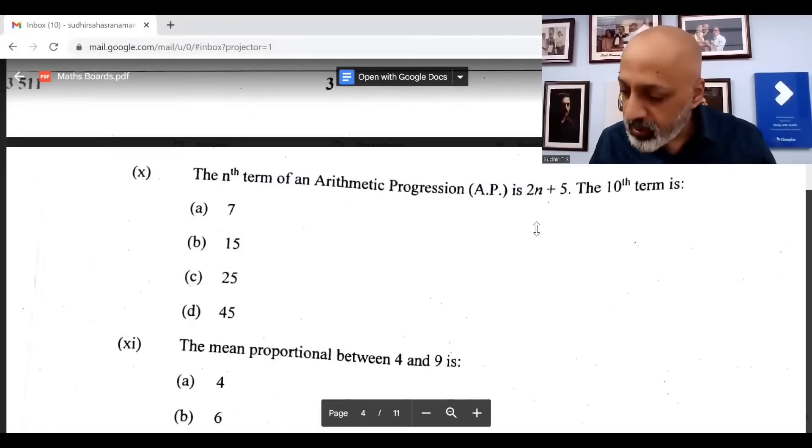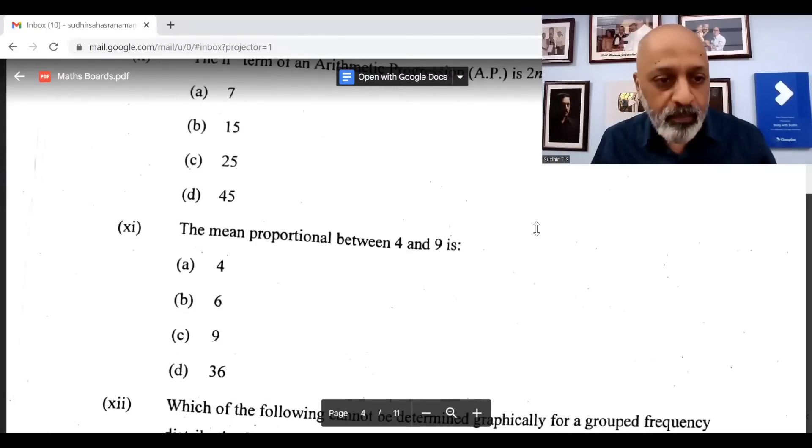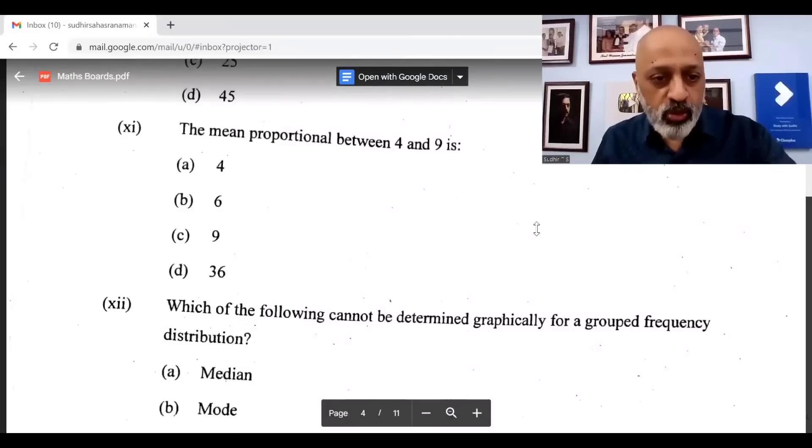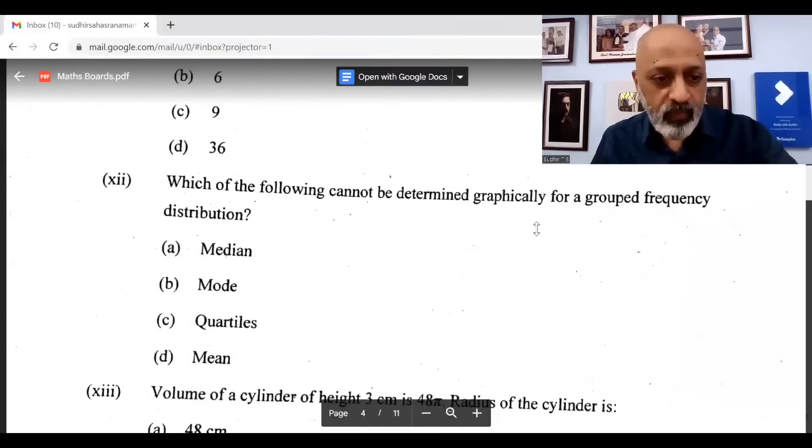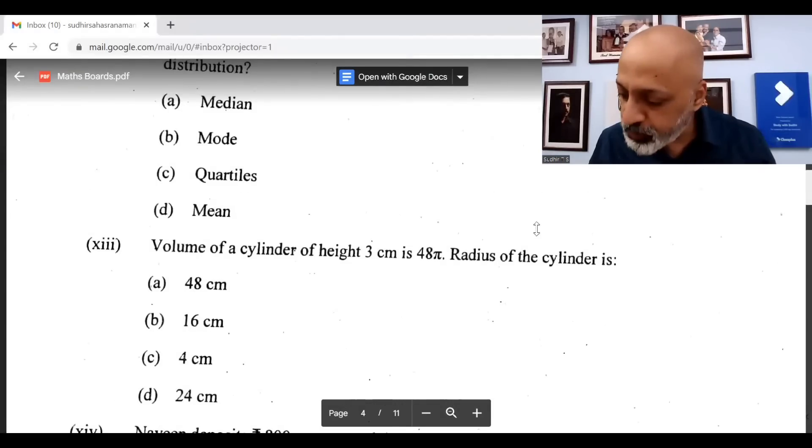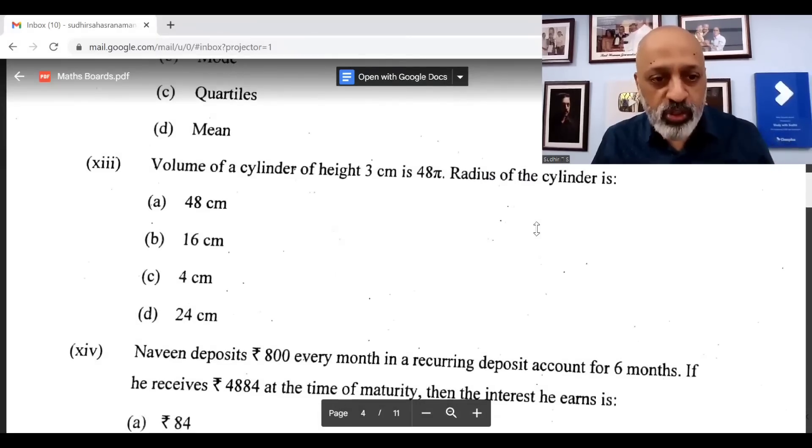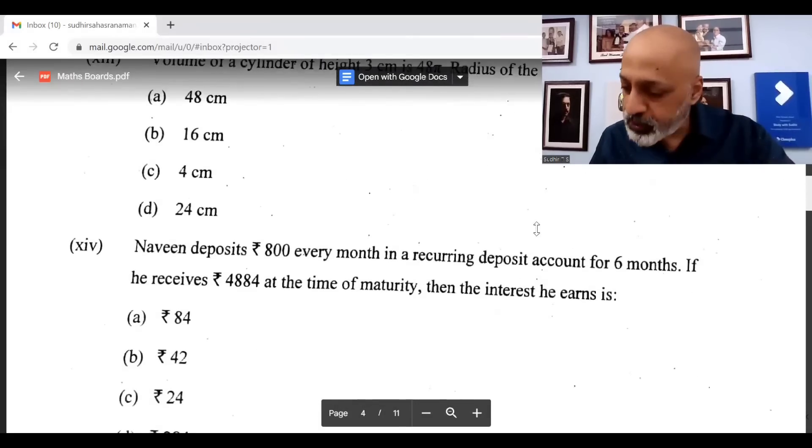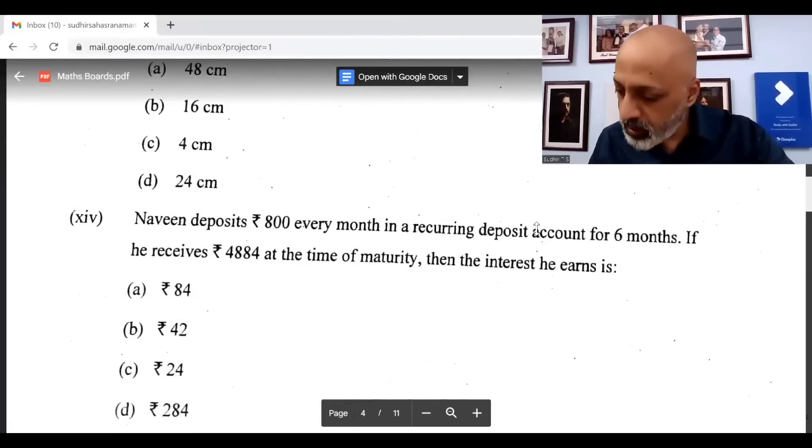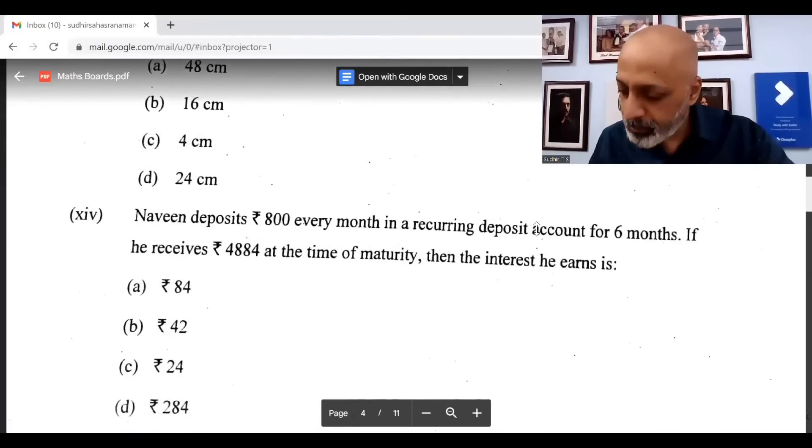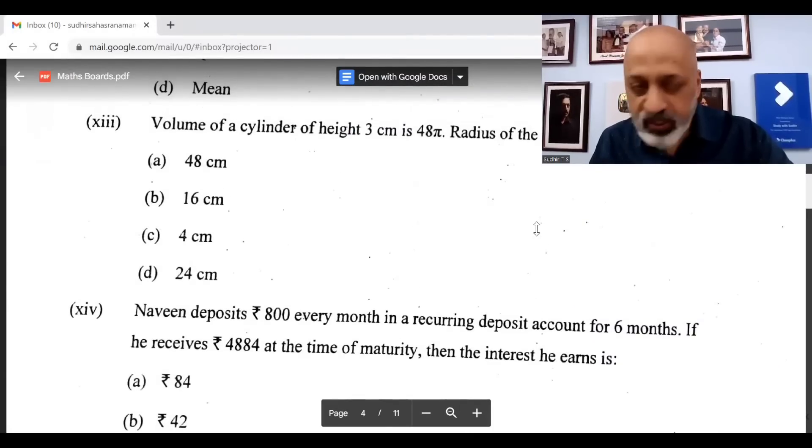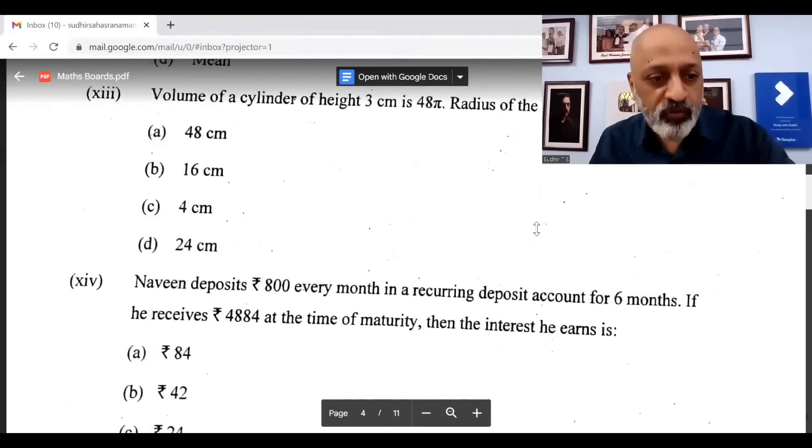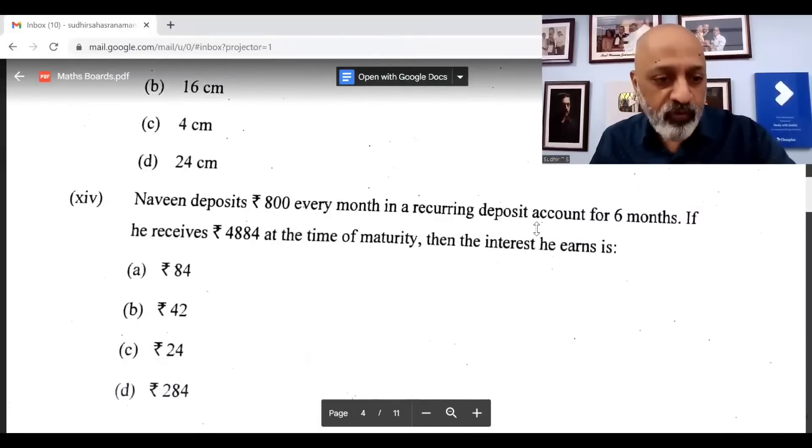The eleventh question, the correct option is B: 6. The twelfth question, the correct option is D: mean. The thirteenth question, the correct option is C: 4 centimeters. The fourteenth question, correction: the correct option is A: 84 rupees.